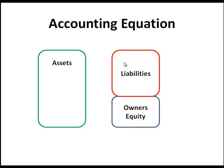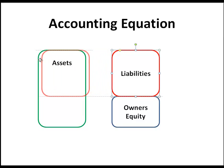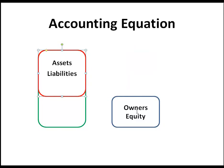The accounting equation is this: assets equals liabilities plus owner's equity. In other words, someone's equity in a business is represented by their assets less their liabilities. We can reorganize the accounting equation by deducting liabilities from both sides, giving us owner's equity equals assets minus liabilities.